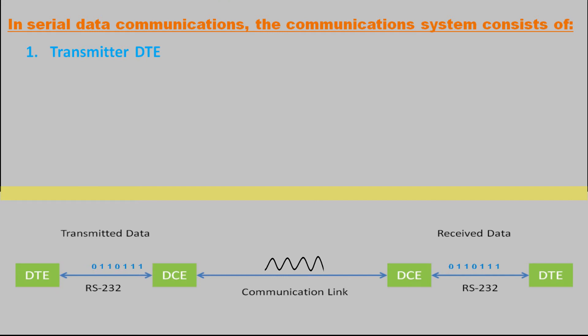In serial data communications, the communication system might consist of first transmitter DTE that is data terminal equipment which is the source and receiver of the data. Data here means a series of 0 and 1 which is nothing but the information to be transmitted.